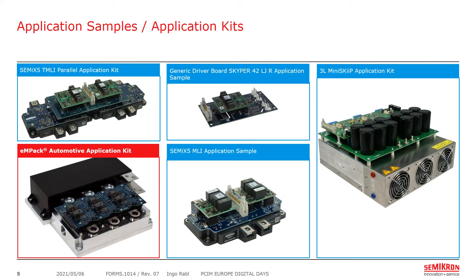This slide shows a few application samples and application kits. Starting at the top left, you can see an application kit for parallel operation of Semics 5 modules — two PCBs, the lower one contacting the power modules and the upper one contacting the two drivers to the contact board. In the middle column, you can see two simple application samples: a generic driver board contacting a Skyper 42 driver, and an application sample for one single Semics 5 module. On the right-hand side, there is a three-phase three-level inverter, and together with the MPEG Automotive Application Kit, this is one of the most complex application kits we offer.